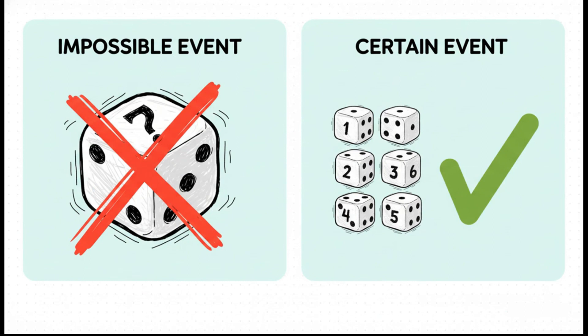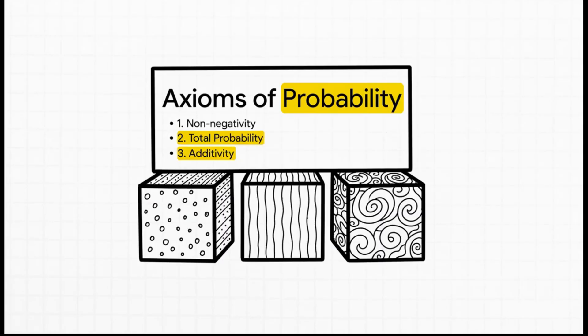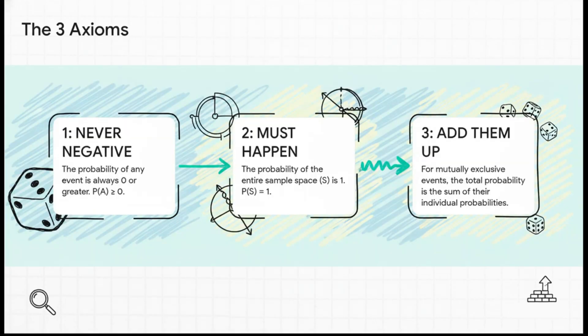Let's make this super concrete with our die. What's the probability of rolling a 7? Well, it's 0. It's just not in our sample space. So it's an impossible event. On the flip side, what's the probability of rolling a number that's less than 7? That's 1. 100%. Every single possible outcome fits that description. So it's a certain event. Now, this whole system is really built on just three simple foundational rules. They have a fancy name, the axioms of probability, but don't let that fool you. They are so intuitive. Honestly, it's just common sense written down. And here they are. First, a probability can never be negative. Right? Makes perfect sense. You can't have less than a 0% chance of something happening. Second, something has to happen. The probability that one of the outcomes in our sample space occurs is 1. And third, if two events can't happen at the same time, you know, like rolling a 1 and a 6 on the very same roll, the probability of getting one or the other is just what you get when you add their individual probabilities together. That's it. That's the whole foundation.